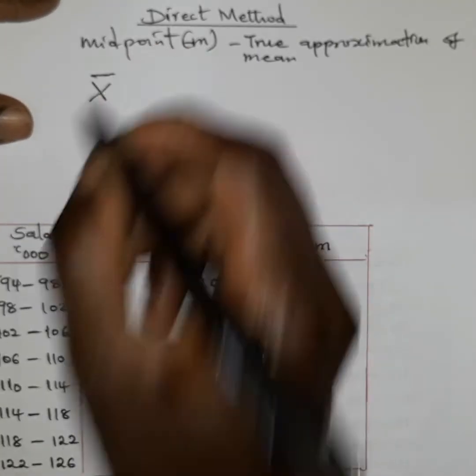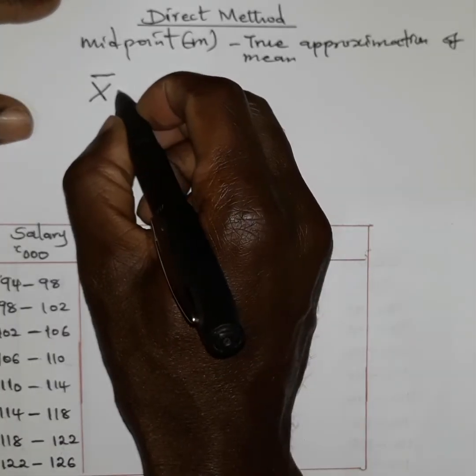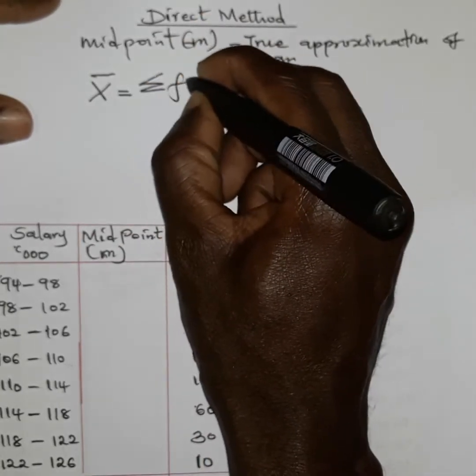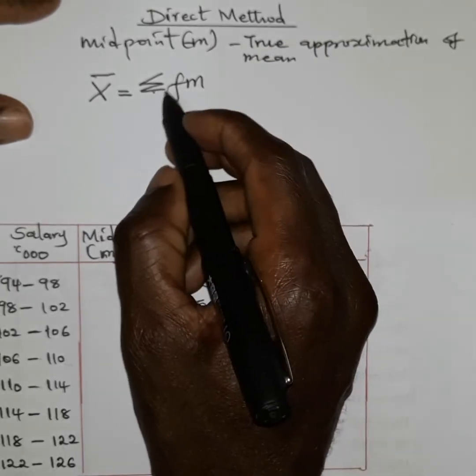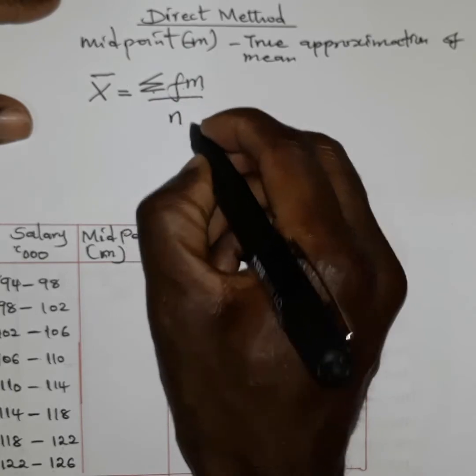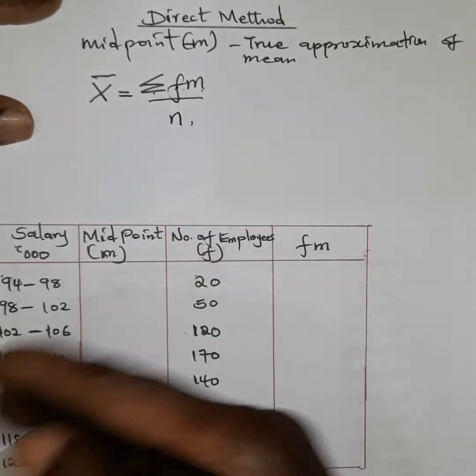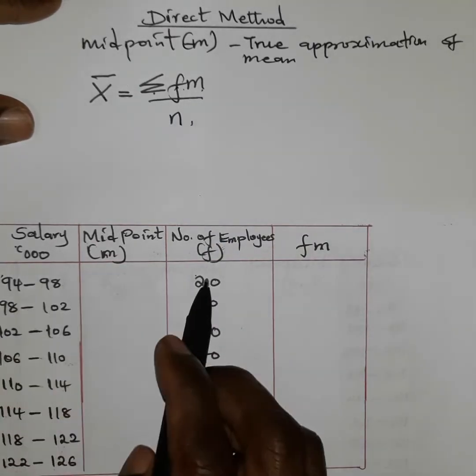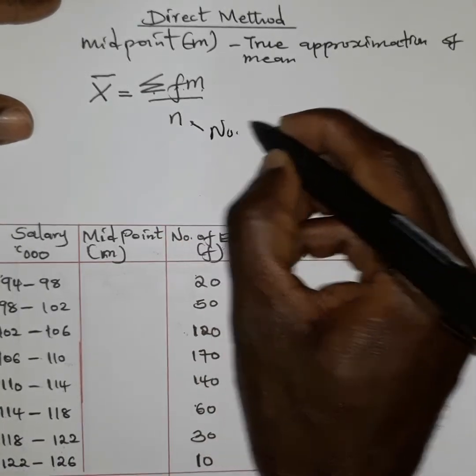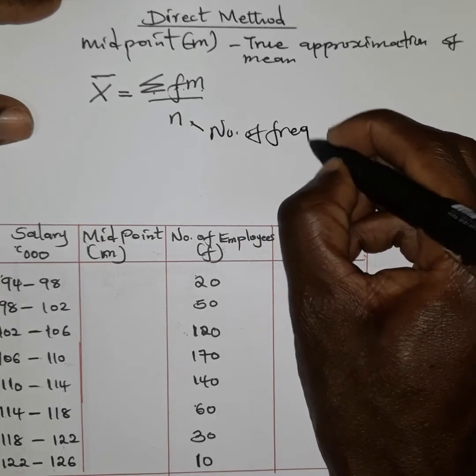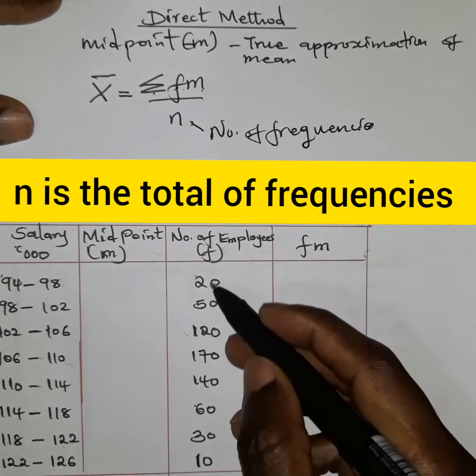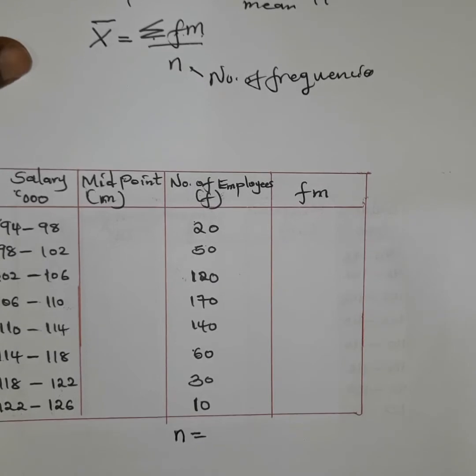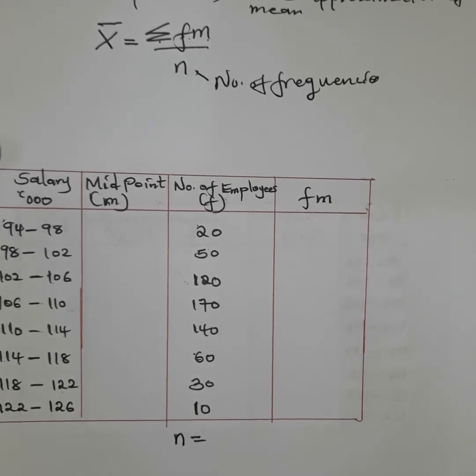When you use the direct method, we normally use this formula here: x̄ standing for mean. For us to get x̄, which is the mean, we normally divide the summation of fm divided by n. Of course, f here refers to the number of occurrence or the frequency. Like in this case, the frequency for 94 to 98 is 20. Then n here refers to the number of frequencies. So we are going to add all this and get an n value below here.